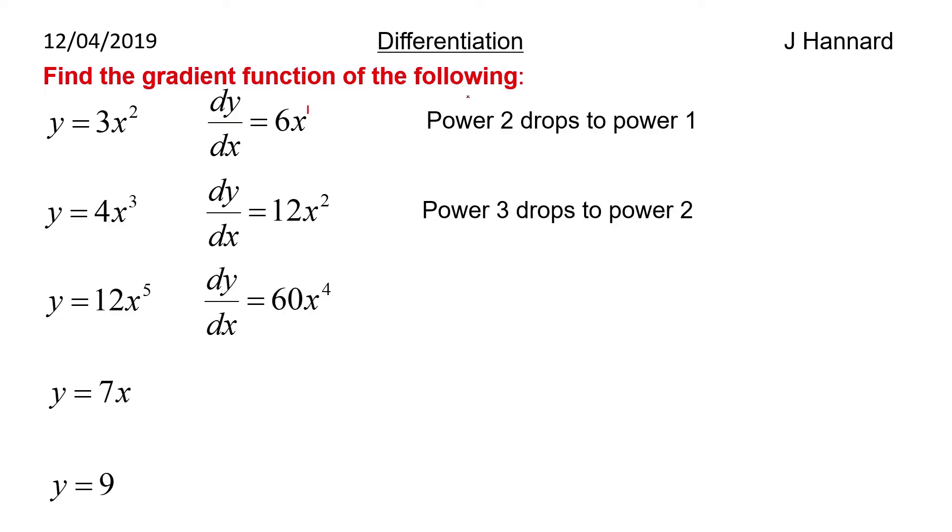12x to the 5, bring the power to the front. So it's going to be 60x to the 4. Power 5 drops to power 4. And then y equals 7x. So we're going to just get a 7, because remember there's an artificial 1 here. That comes to the front times by the 7 which is still 7. And x to the 0 is actually here. So there's an artificial x to the 0 here. But anything to the power of 0 is just 1, so it washes away. Power 1 drops to power 0.